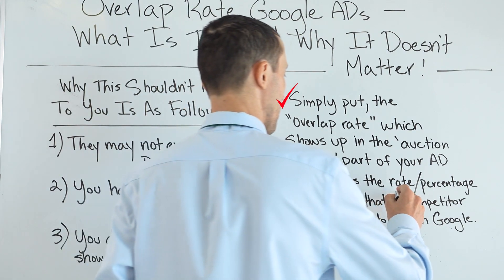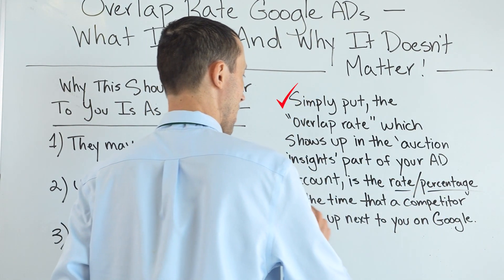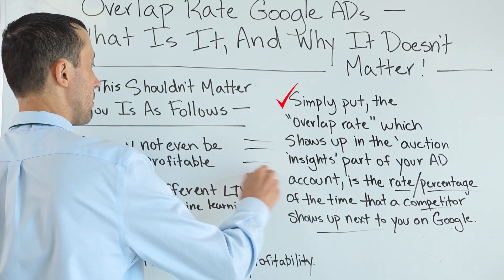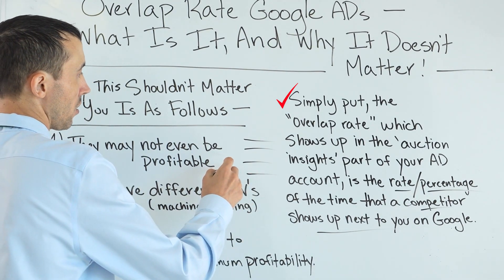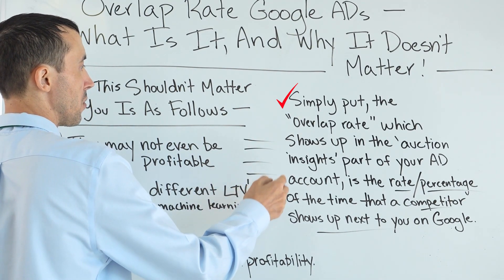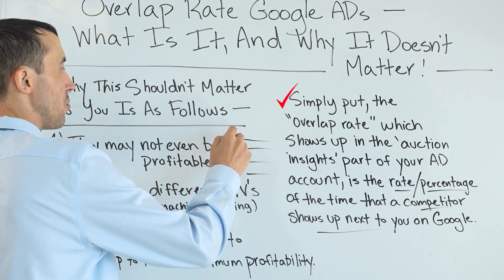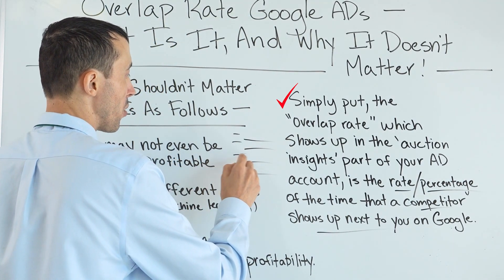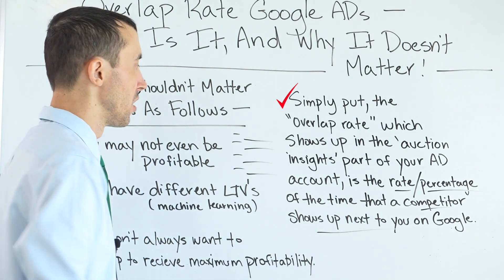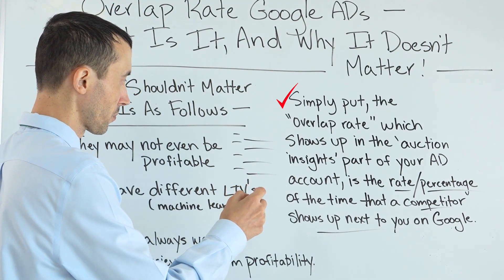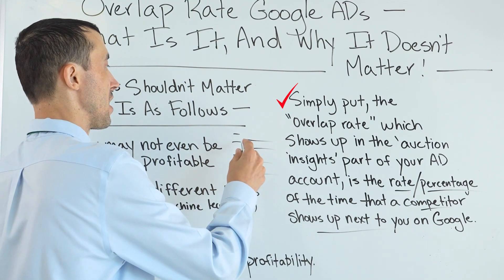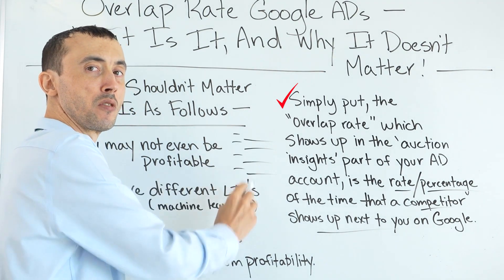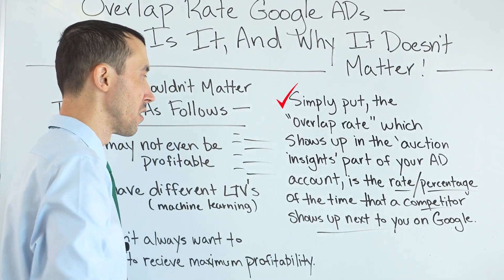is the rate or percentage of the time that a competitor shows up directly next to you. So if there are four ad spots on the top of Google, a 100% overlap rate would mean that for the keywords you're both advertising on, you both show up in the top four ad spots on Google 100% of the time. So 0% would essentially mean the competitor is always showing up and you are never showing up when the competitor shows up in the top four ad spots.